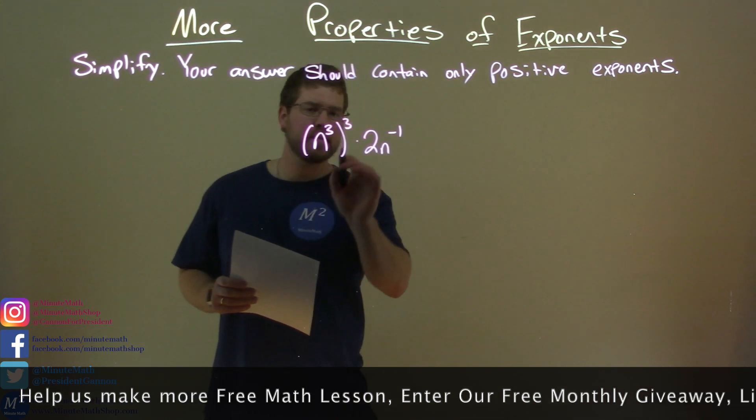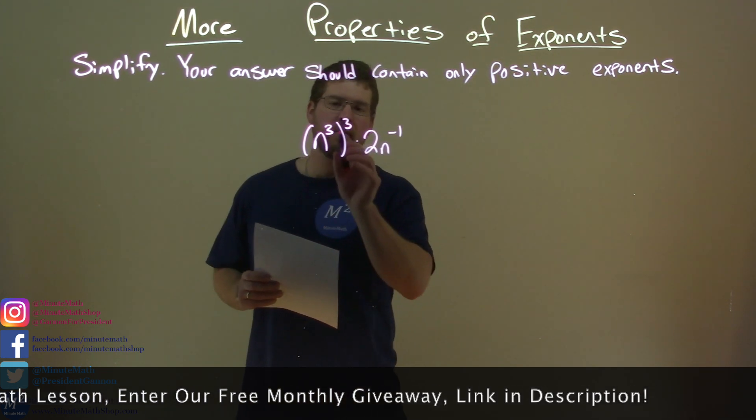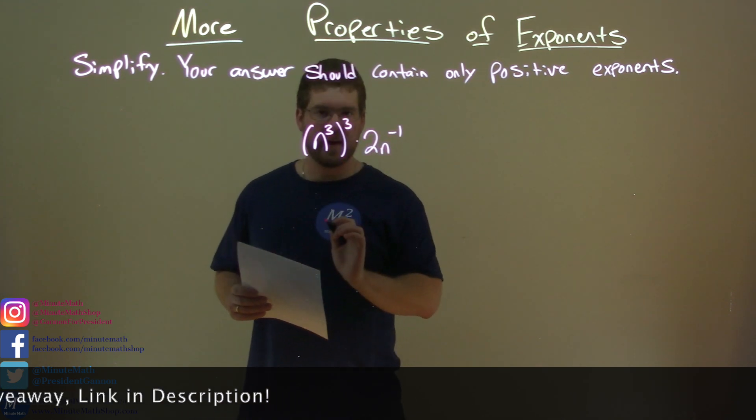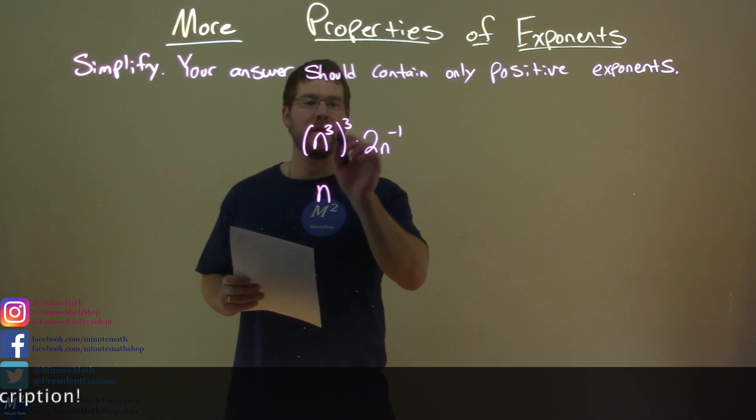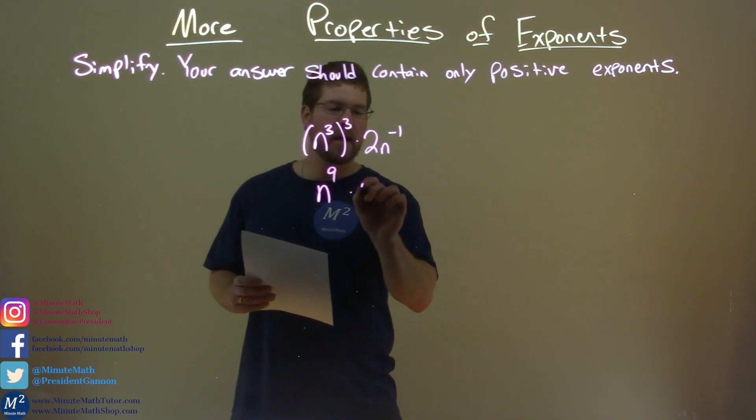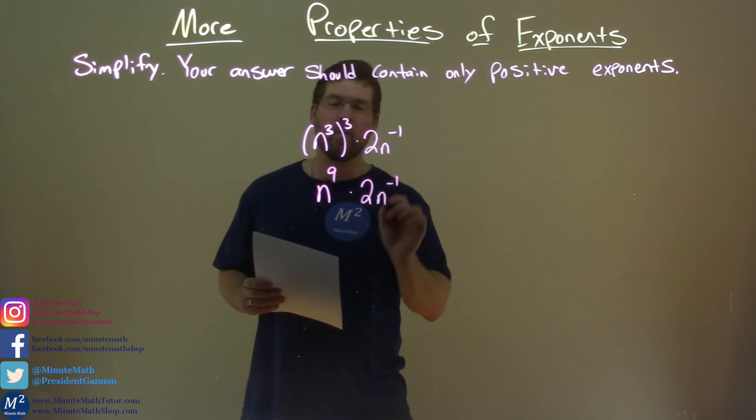First thing I'm going to deal with here is n to the third to the third power. Since we're raising this to another third power, we multiply the exponents. So we have n to the 3 times 3, which is 9 as our exponent. Bring down the 2n to the negative one power.